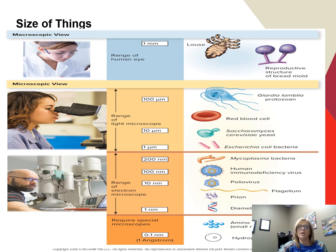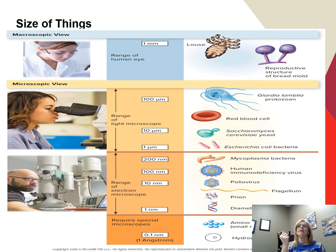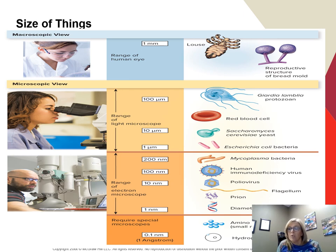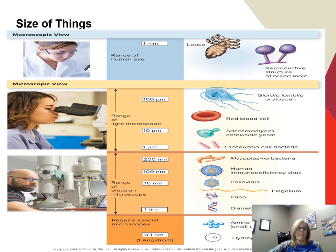This chart shows the different relative sizes of things. At the top you can see mold reproductive spores or a body louse. Below that are things like giardia, which is in the protozoan classification. Then red blood cells, yeast, E. coli, getting smaller from there — all the way down to HIV and a prion, which is an infectious protein. It's still hard to wrap your mind around these sizes.